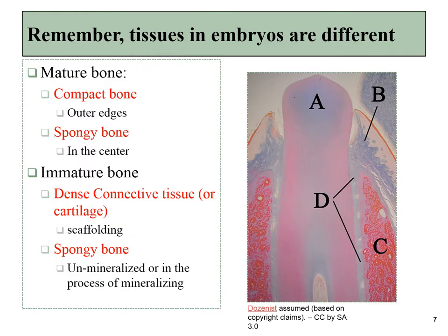This slide is a reminder that we will frequently be looking at the histology of these tissues from sections taken from embryos, and embryonic tissues are often immature. So in an adult, the bones would have compact bone on the outer edges and spongy bone in the center, but you may not see that in a lot of the histology images. Immature bone may be unmineralized or just beginning to mineralize. When we first make bone tissue, we make it as mostly spongy bone — later, the outer edges will become compact bone. You might see a bunch of spongy bone, or possibly even regions of scaffolding that haven't yet turned into bone tissue.